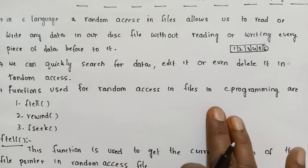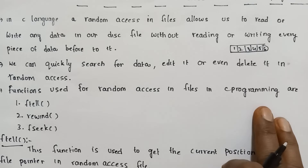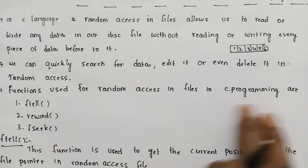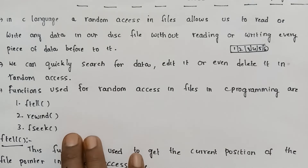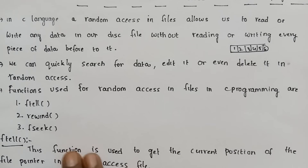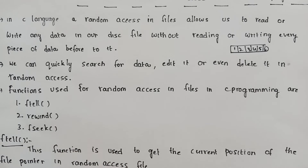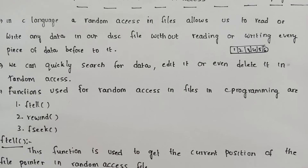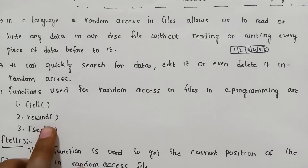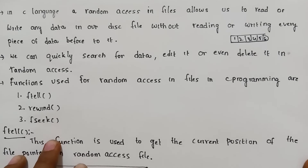The functions used in random access files in C programming are ftell, rewind, and fseek. These are three predefined functions used in random access files.